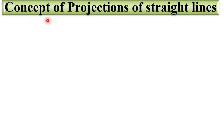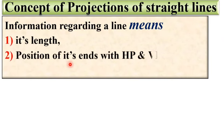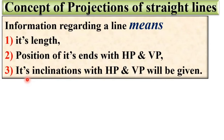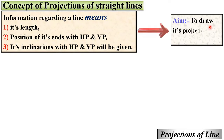Before starting the different cases, let us understand the concept of projections of lines. We need to gather information regarding the lines: its length, position of its ends with respect to the horizontal plane and vertical plane, and its inclinations with HP and VP. From this information, our aim is to draw its projections — in other words, the front view and top view of the line.